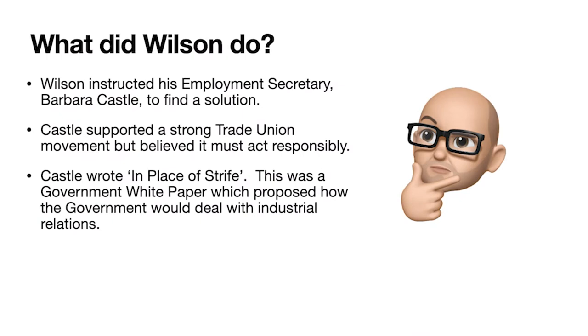The first thing Wilson does is appoint his new employment secretary, Barbara Castle — MP for Blackburn and an MP since 1945. She's a very feisty woman with strong views and quite a left-wing background, until she gets into power. Again, we see her adopt a more centrist approach. The view is that she really wants to make sure that unions have a voice, but that now needs to be enshrined in legislation, and unions need to act responsibly. Wilson gets Castle to find a solution.